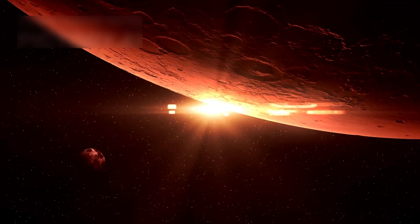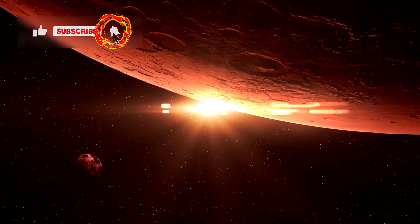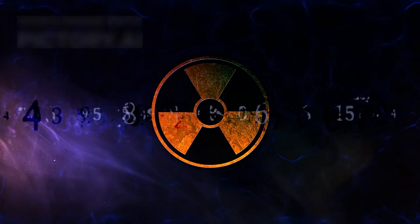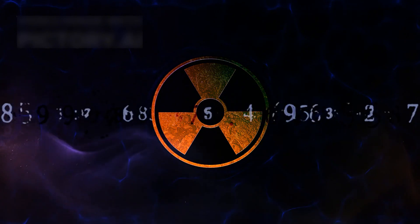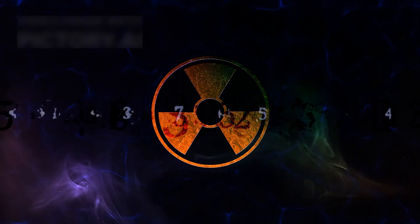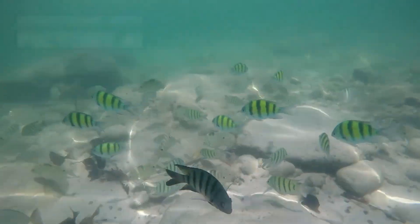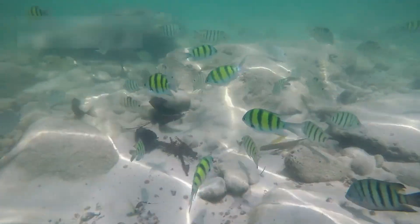This is even more shocking because red dwarfs usually blast planets with harmful radiation. But K218b seems to resist that fate, raising hope that life might be able to thrive there. If the planet has a stable atmosphere and stays in the right temperature range, life could exist.